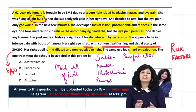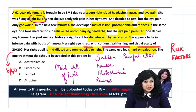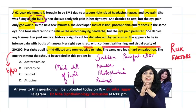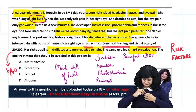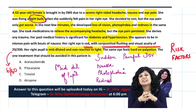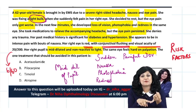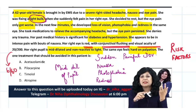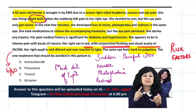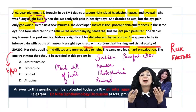The question asks: which one treatment should be avoided in this patient? The options are acetazolamide, pilocarpine, timolol, or atropine. The answer is simple once you have made the diagnosis. Sudden painful diminution of vision, nausea, photophobia, redness, mid-dilated non-reactive pupil, history of diabetes and hypertension, and a hard eye on palpation.